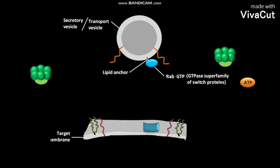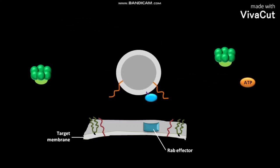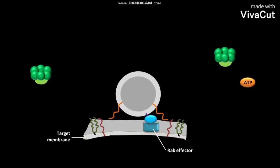This is the target membrane. On the target membrane, a Rab effector protein complex is present. First of all, the Rab-GTP on the transport vesicle binds to the Rab effector protein complex on the target membrane.